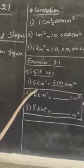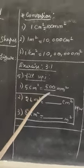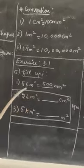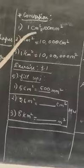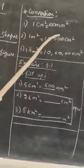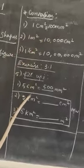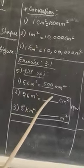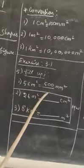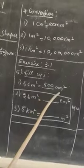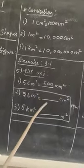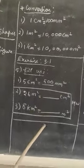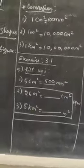See the first one: 5 centimeter square equals — since 1 centimeter square equals 100 millimeter square, 5 centimeter square equals 5 into 100, giving the answer 500 millimeter square. You can find out the remaining two values and send them to me.